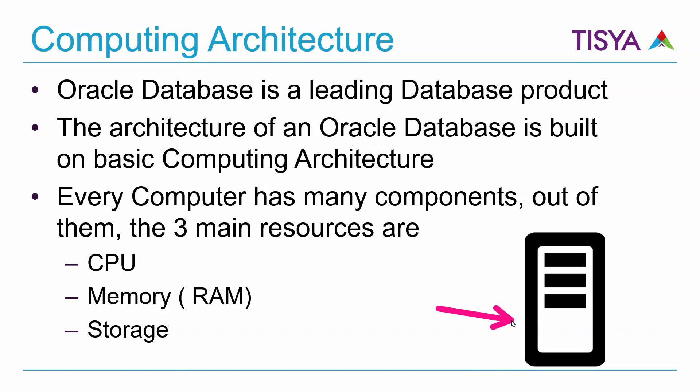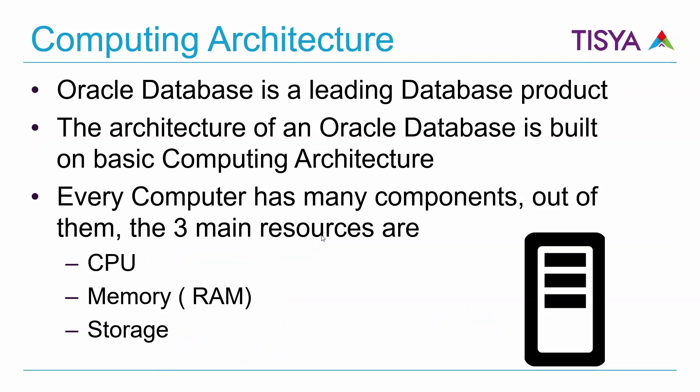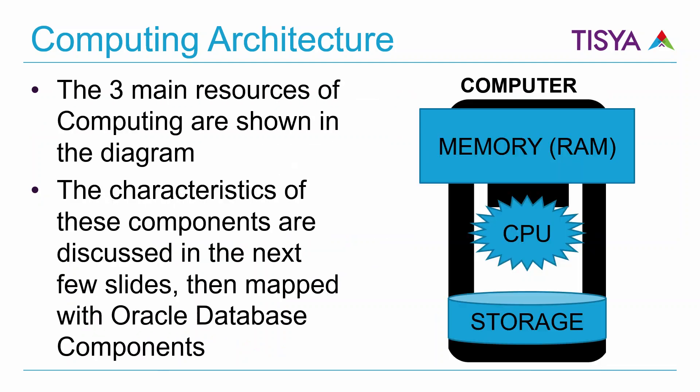A computer, if I have to represent this black box, has various components within it, but the CPU, memory or RAM, and storage are the three critical resources to do processing of data. Of course, there is also networking to access resources over the network, but we are going to limit our discussion to these three resources.